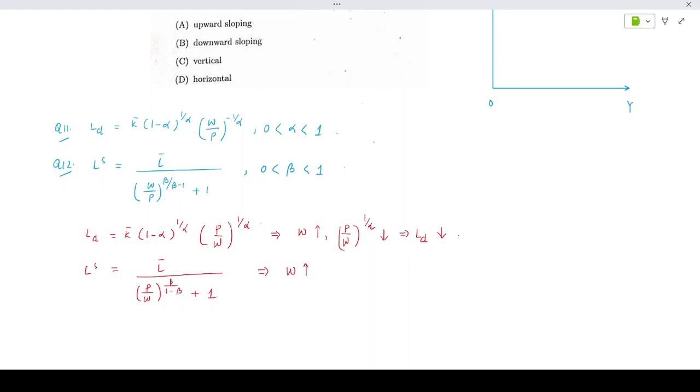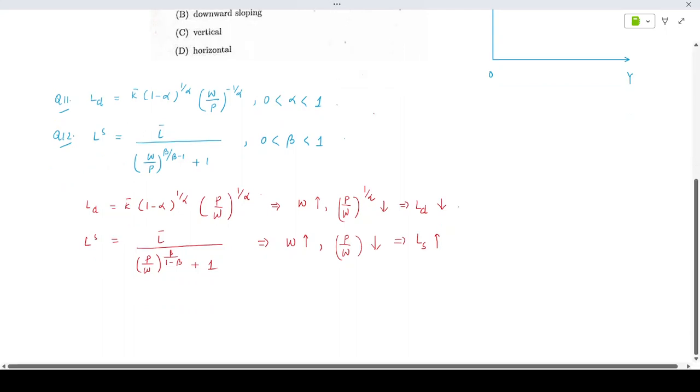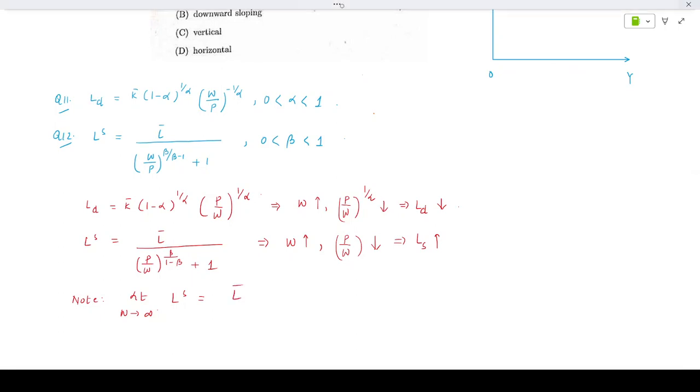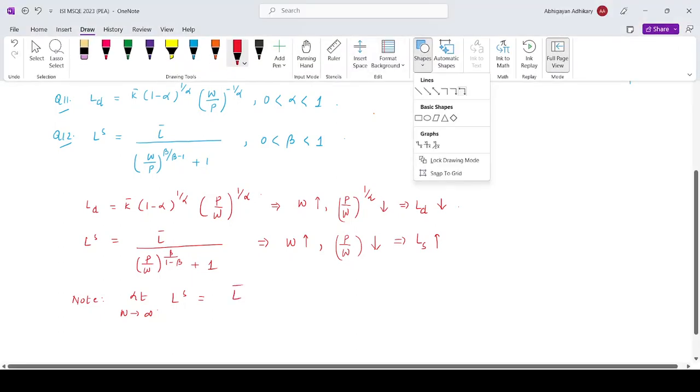If w increases, then the power is a positive power, so (p/w) falls and labor supply increases. Also note one thing for the labor supply curve: if you continuously go on increasing the wage, as limit w tends to infinity, this will give you l bar. That means if I'm drawing a small diagram over here...